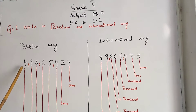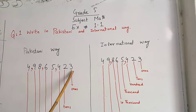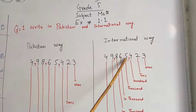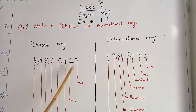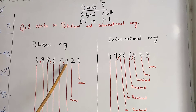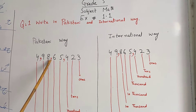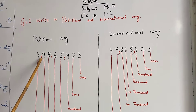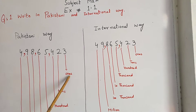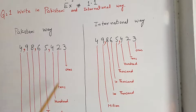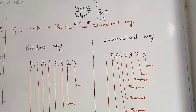Now look — the value is the same: 4 9 8 6 5 4 2 3. In the Pakistani way, after 3 numbers I put 1 comma, then after 2 numbers I put 1 comma, then again after 2 numbers I put a comma. In the international way, the first value is ones, second is tens, third is hundreds, fourth is thousands, and the fifth value is ten-thousands.